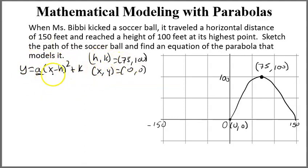I'm going to plug these values into this equation and solve for A. So here we go. So I get Y is 0. That equals A times X. X is 0. Minus H, or minus 75 squared. And K is 100. So I'm going to solve this. First off, let's figure out what 0 minus 75 squared is.